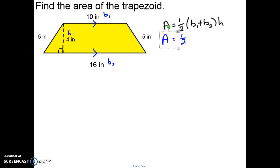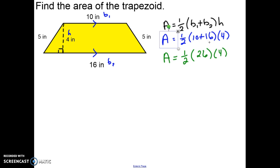A equals one-half times the sum of 10 and 16, times 4. Following order of operations, we add inside the parentheses first: 10 plus 16 is 26. Then multiplying left to right: half of 26 is 13, and 13 times 4 is 52. So the area of the yellow trapezoid is 52 square inches.